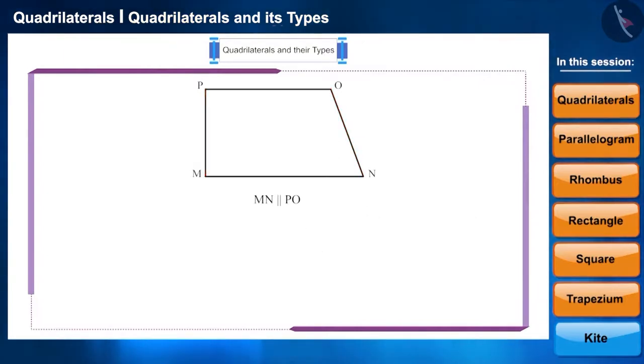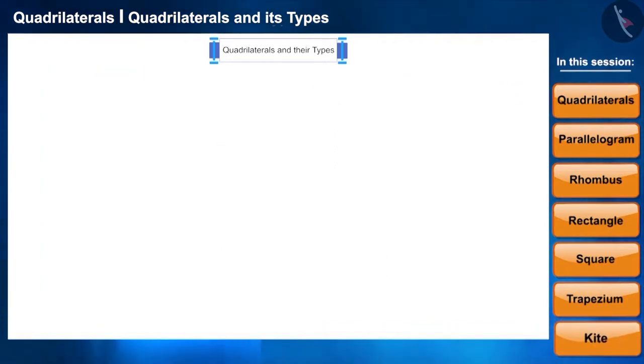Consider the sides which are not parallel. What if they are equal? Such trapeziums are called isosceles trapezium.